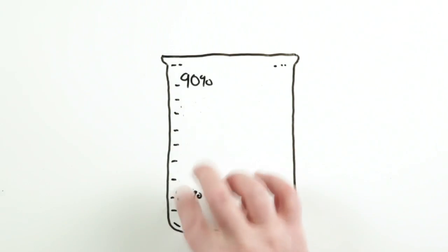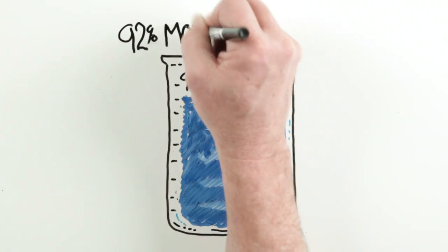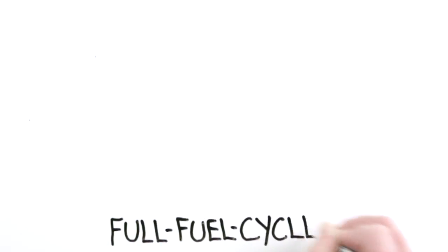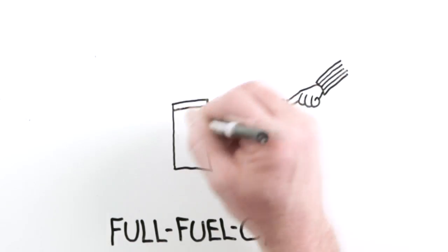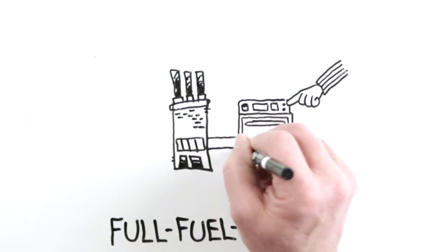natural gas is 92% efficient when you consider something called the full fuel cycle. What is the full fuel cycle, you ask? Well, it's easy to understand when you look at the journey energy takes from where it is produced to your home.